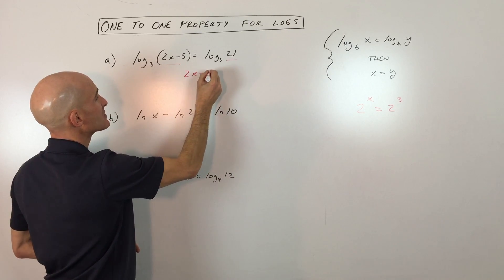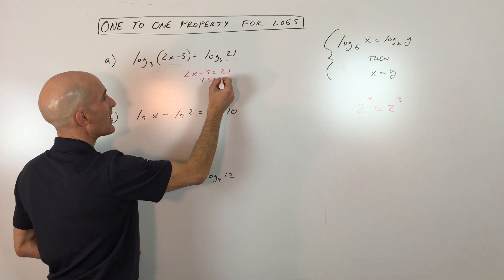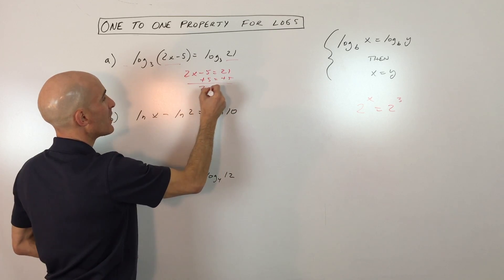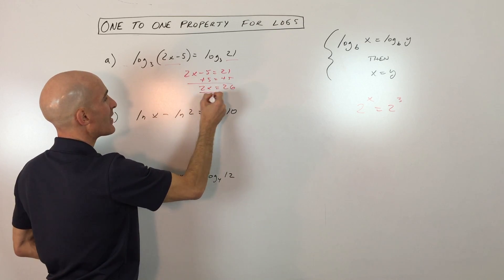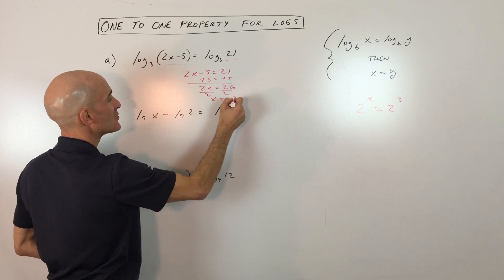So we have 2x minus 5 equals 21, add 5 to both sides. So we get 2x equals 26, divide by 2, and you can see that x equals 13.